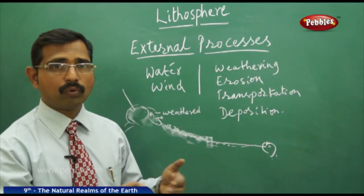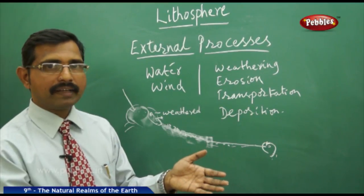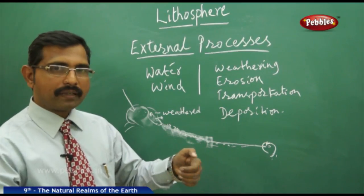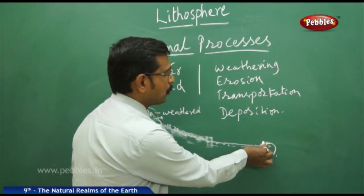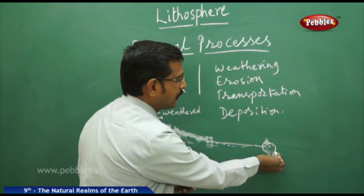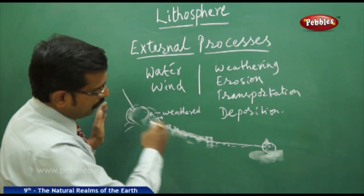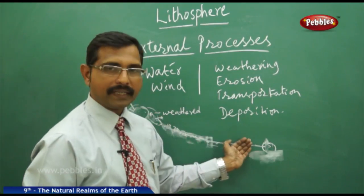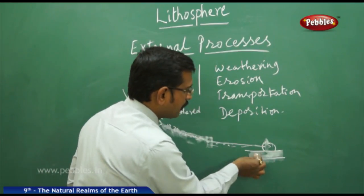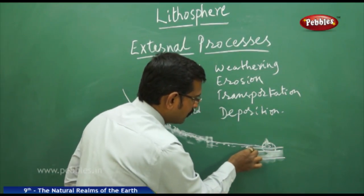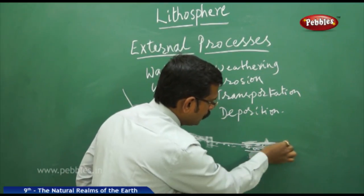When the flow of wind or water slows down, it can no longer carry the material and drops it — deposition takes place. Over many years, material is repeatedly dumped in the same location, becoming compacted and forming layers of different material.